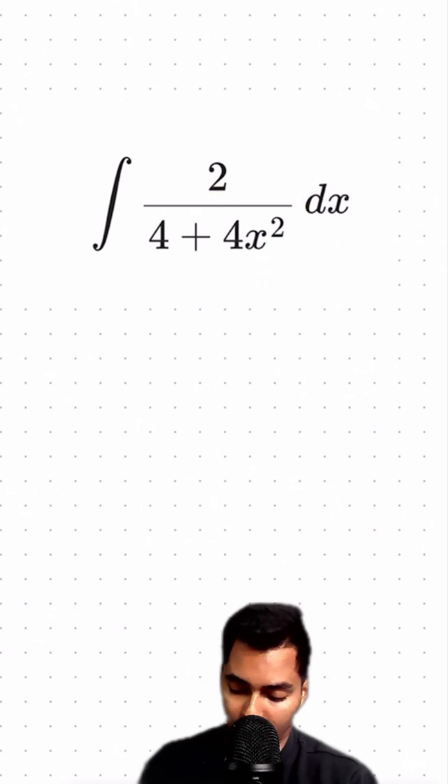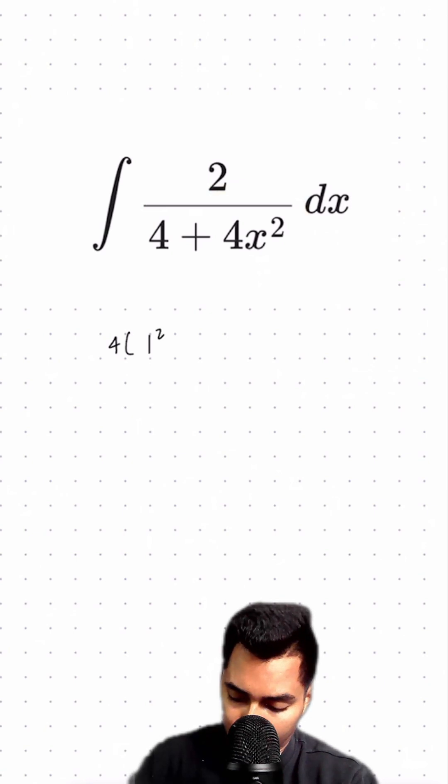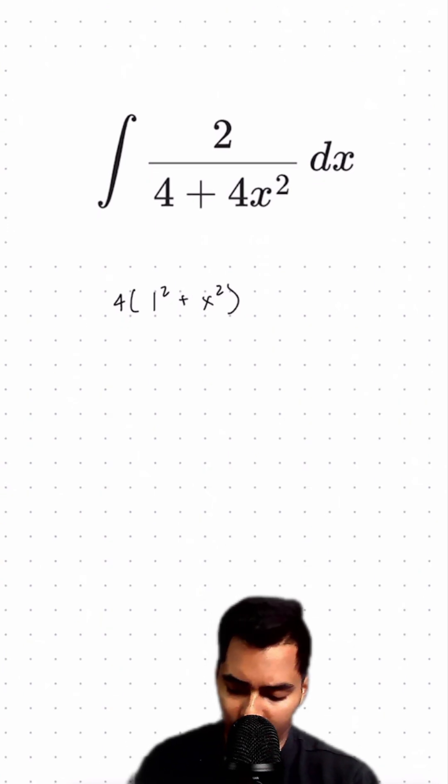We can write the denominator as 4 times 1 squared plus x squared. Since we have the addition of 1 squared plus x squared, let's consider a right triangle.